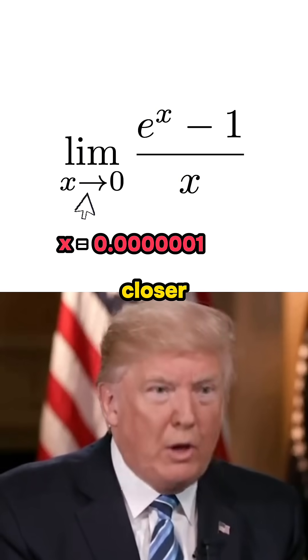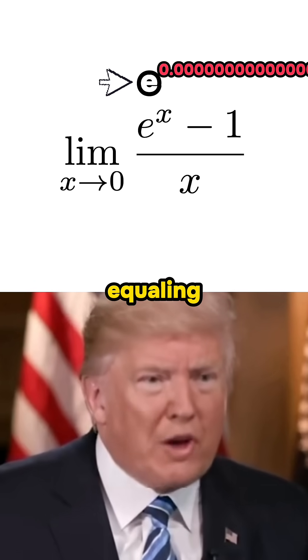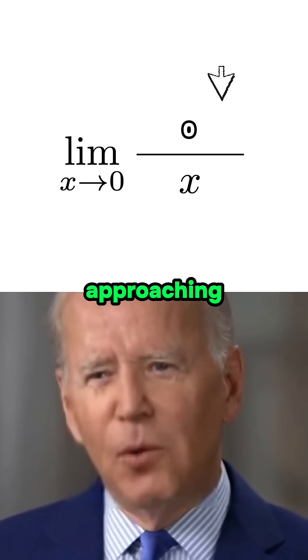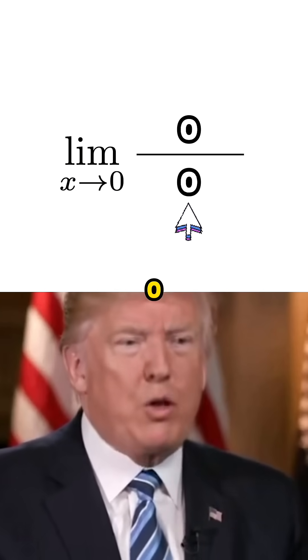So look, as we make x closer and closer to 0, this e to the x will get closer and closer to equaling 1. So then as we minus 1 from it, the top of the fraction will end up approaching 0. And the bottom of the fraction, which is just x, will end up approaching 0 too.